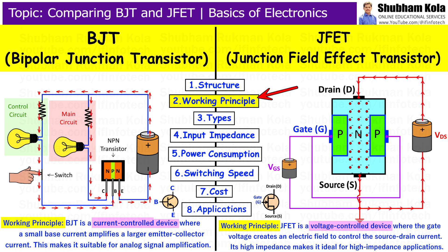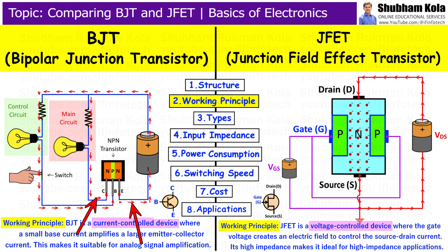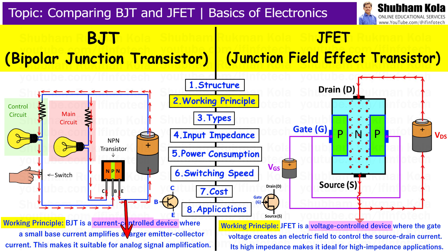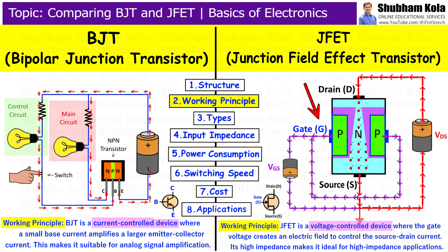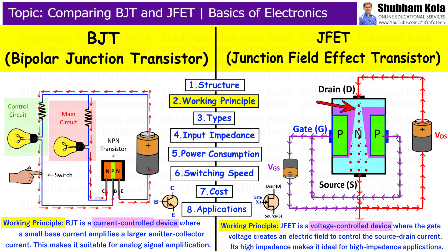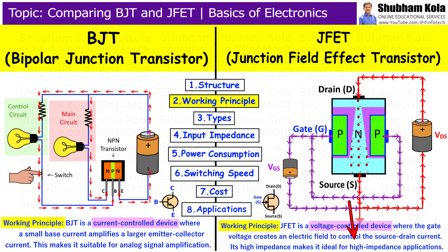Second is Working Principle. The working principle of BJT and JFET are fundamentally different. BJT is a current-controlled device where a small base current controls a large current flowing from the collector to the emitter. This amplification mechanism makes BJT ideal for analog signal amplification. JFET is a voltage-controlled device where the gate voltage creates an electric field that controls the current flowing between the source and drain. This high impedance control mechanism makes JFET suitable for high impedance applications.